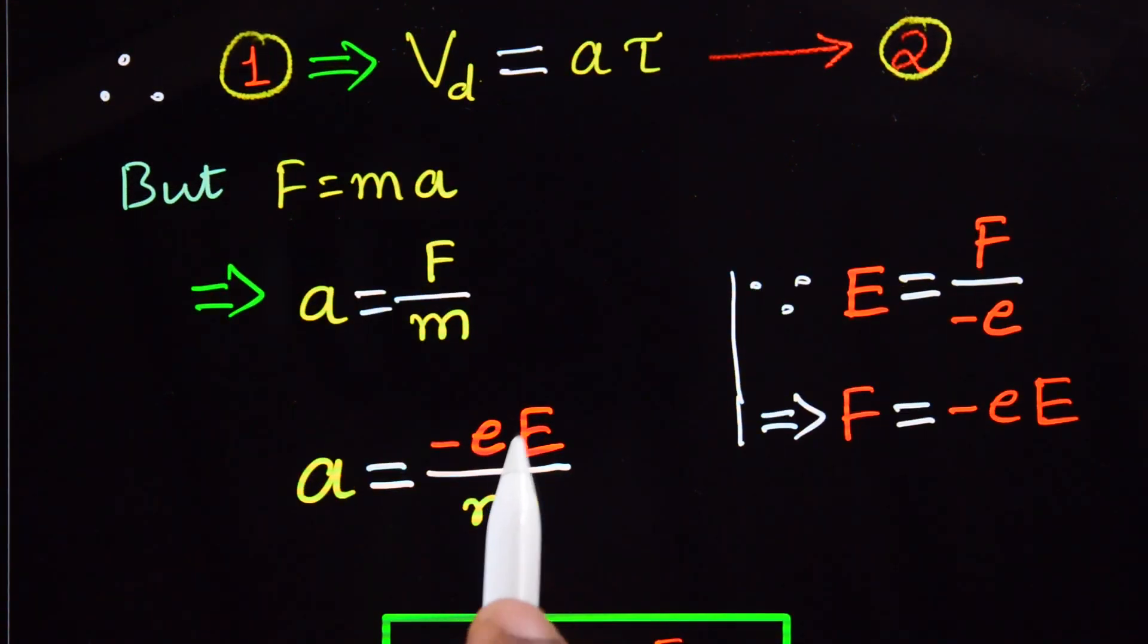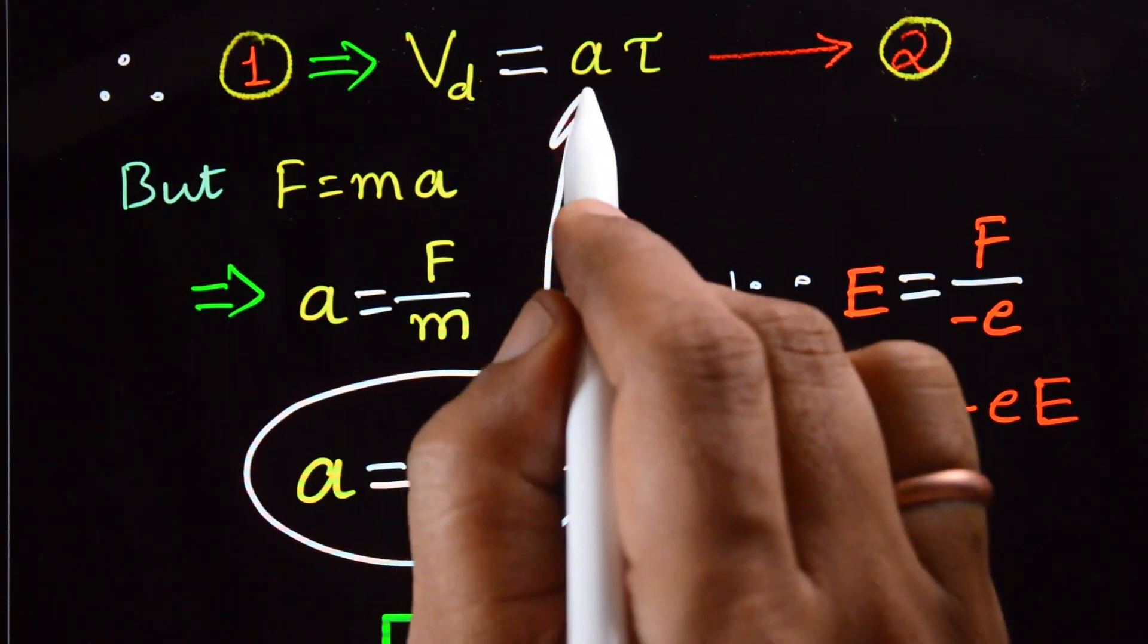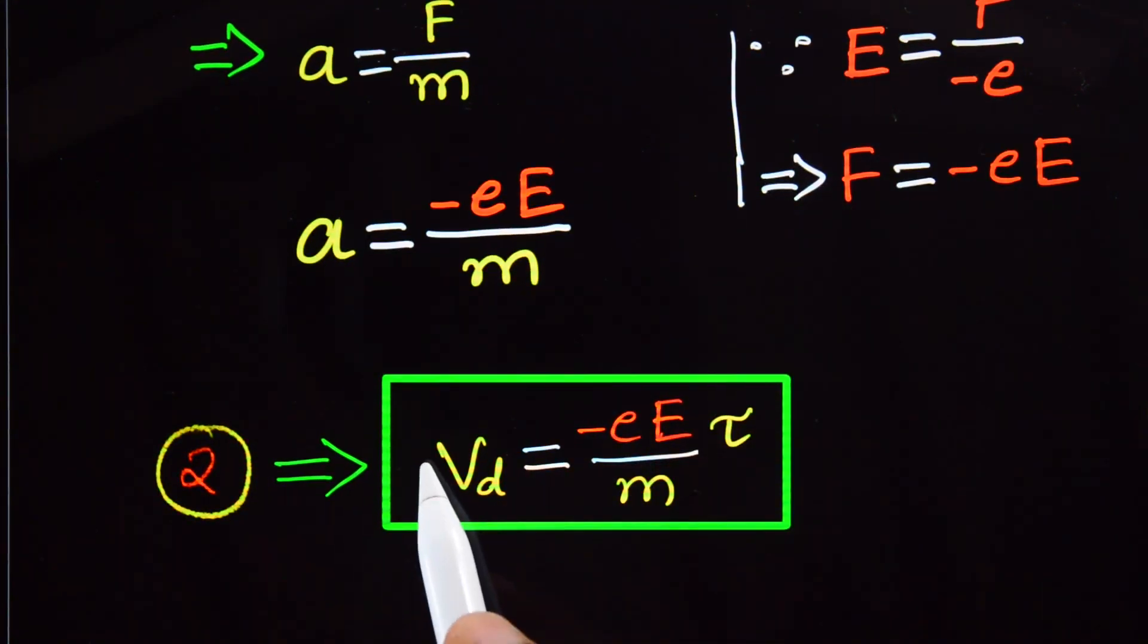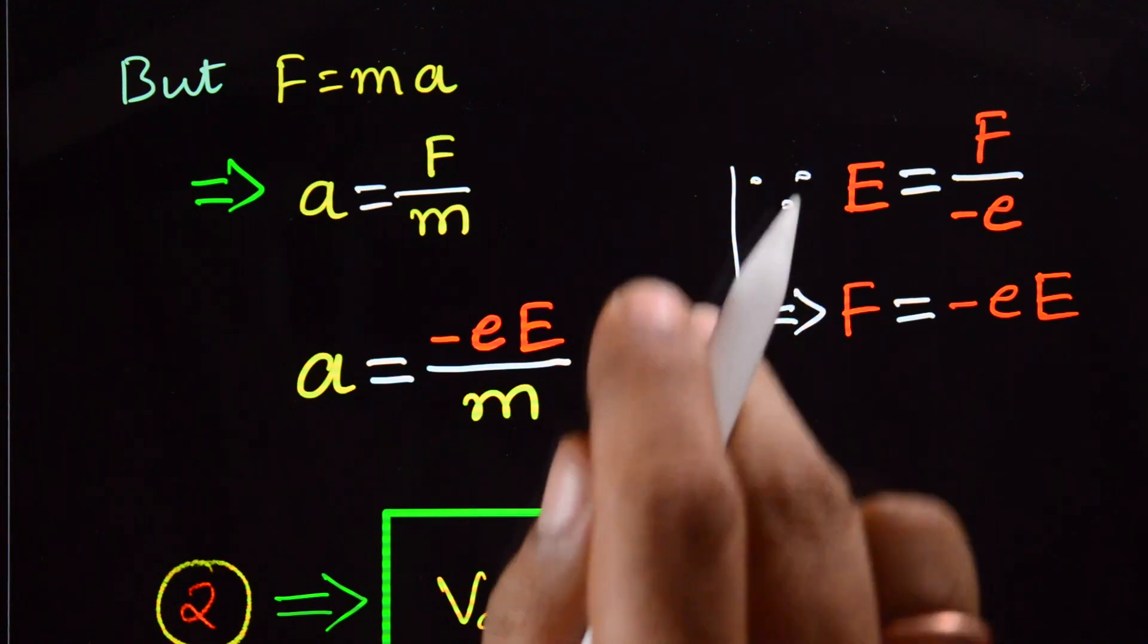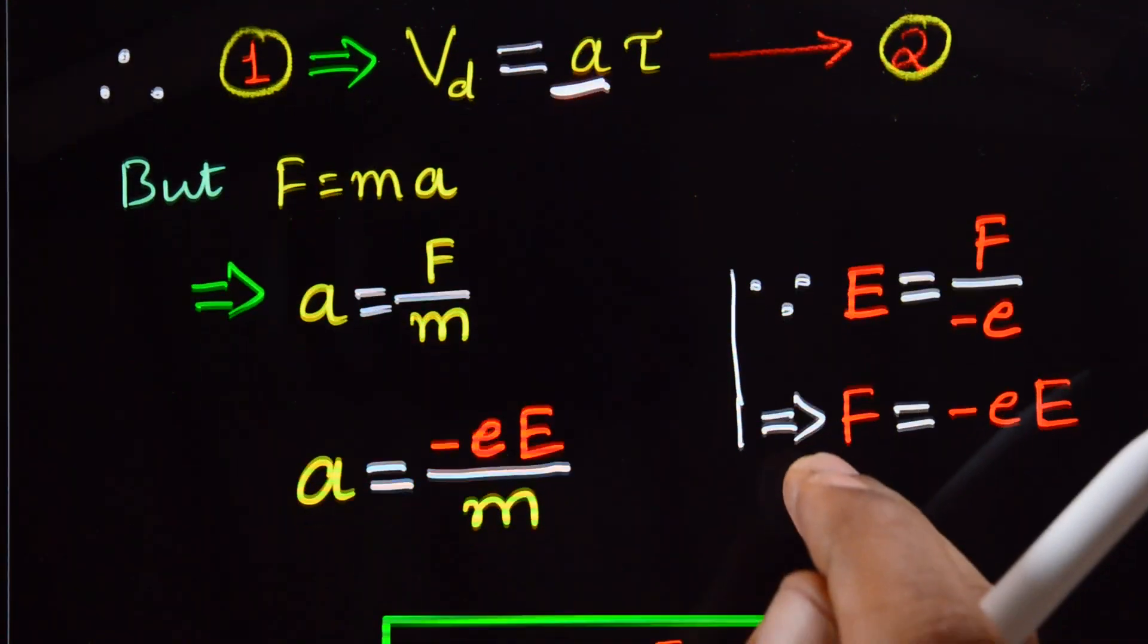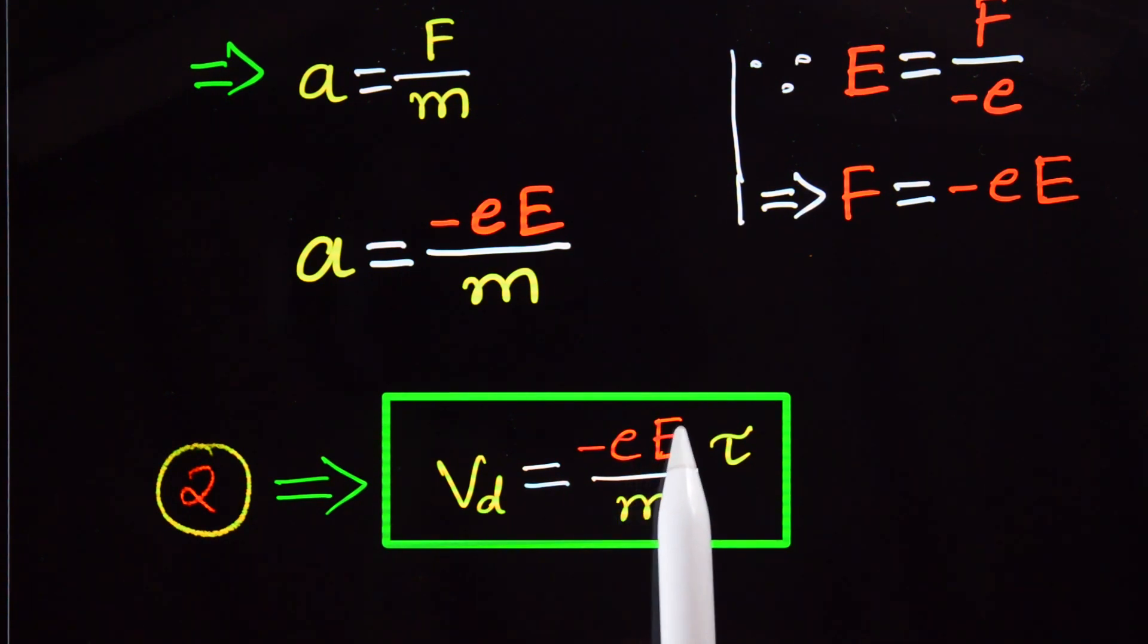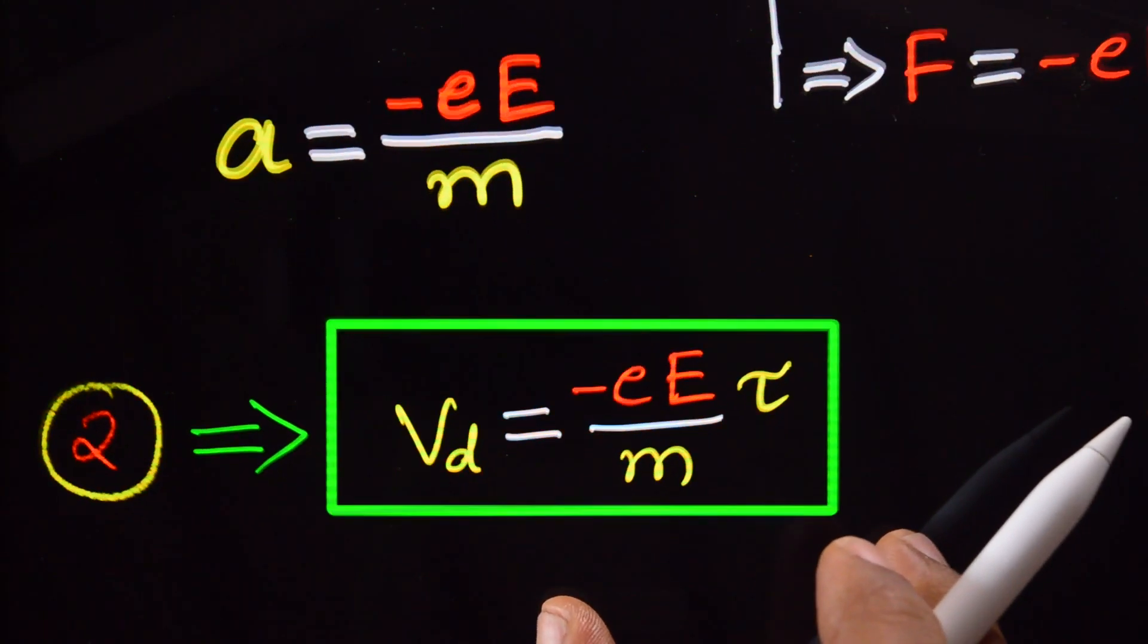Now substitute the value of F here. Acceleration a equals minus e times capital E divided by m. Substituting this acceleration value into equation 2, we get V_d equals minus e times capital E divided by m, times tau.